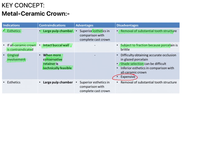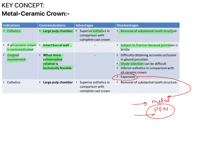Regarding expenditure, it is noted as expensive. When comparing metal and a PFM crown — porcelain fused to metal — we would think PFM is more expensive. However, in the Indian and Asian subcontinent, we use base metal alloys for metal crowns with ceramic overlay. But technically, metal crowns are more expensive.